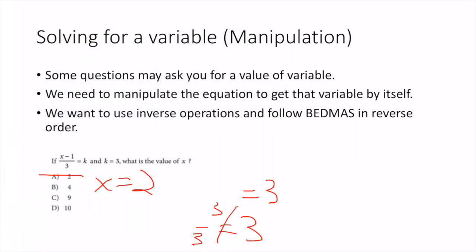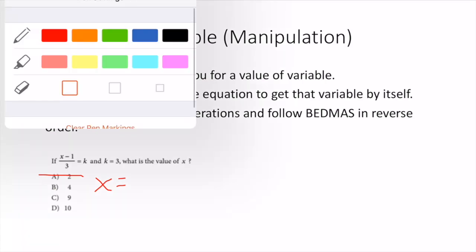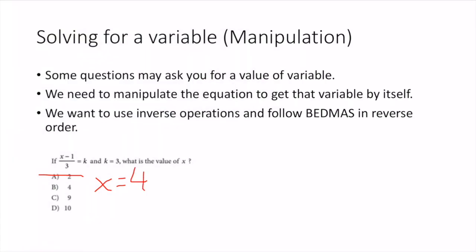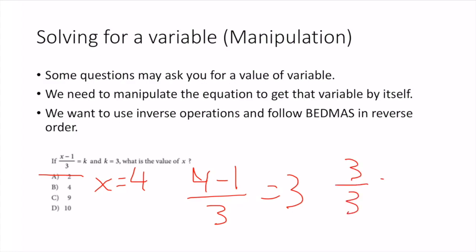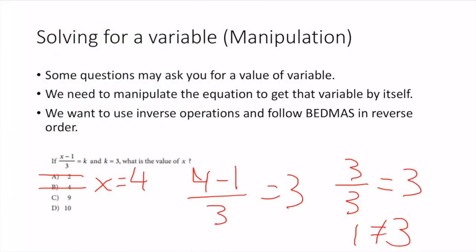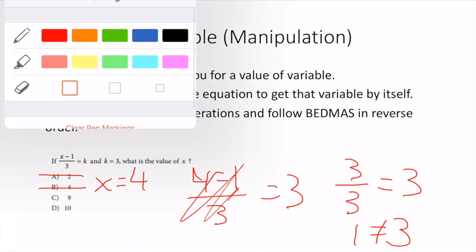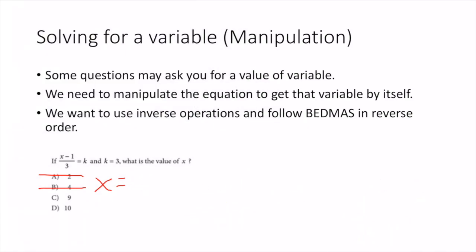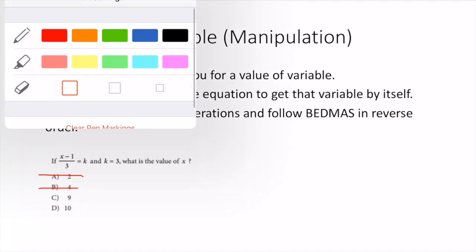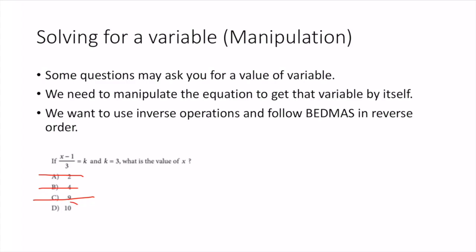For B, plug in x = 4: (4 - 1) / 3 = 3 becomes 3/3 = 1, which is not 3. So B doesn't work either. Going through all options, C doesn't work, but x = 10 does work — so my answer is 10.